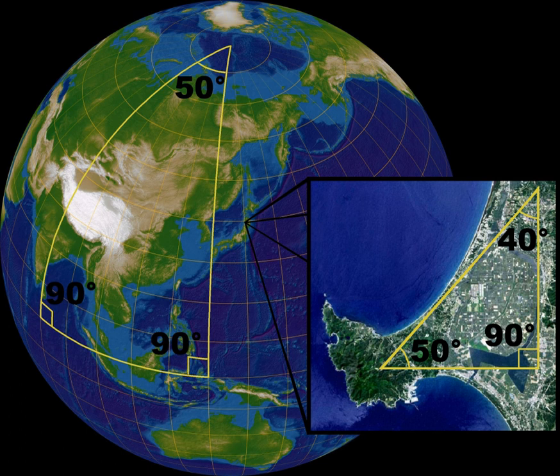Another way to describe the differences between these geometries is to consider two straight lines indefinitely extended in a two-dimensional plane that are both perpendicular to a third line. In Euclidean geometry, the lines remain at a constant distance from each other. In hyperbolic geometry, they curve away from each other, increasing in distance as one moves further from the points of intersection with the common perpendicular; these lines are often called ultraparallels. In elliptic geometry, the lines curve toward each other and intersect.